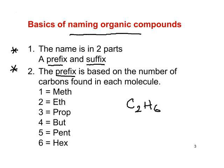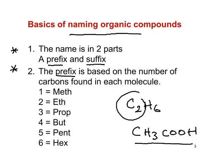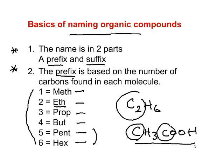For example, C₂H₆ has two carbons. Ethanoic acid — present in vinegar — also has two carbons, so both begin with the same prefix. I'd like you to stop the snapcast and learn these six prefixes: meth (1 carbon), eth (2), prop (3), but (4), pent (5), and hex (6). Pent and hex are easy because pentagon is five-sided and hexagon is six-sided. Spend a little more time with the others.